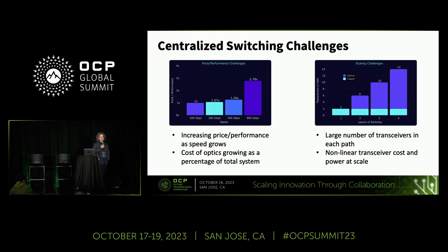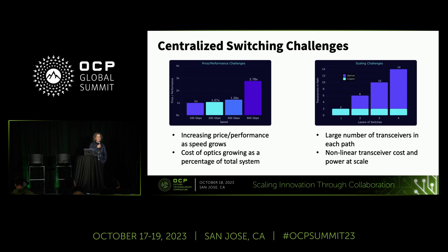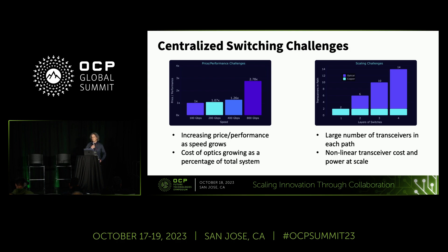There's actually an error in the graph on the right — we have to add two to all those numbers. A couple of challenges with typical switches deployed in the data center, whether Ethernet or InfiniBand: as you increase link speed from 100G to 200G, 800G, and then 1.6T coming, the price performance actually gets worse. You're paying more for what you're transmitting. As bandwidth requirements go up and you use the latest generation of optics, the cost of optics becomes a larger and larger percentage of the system.